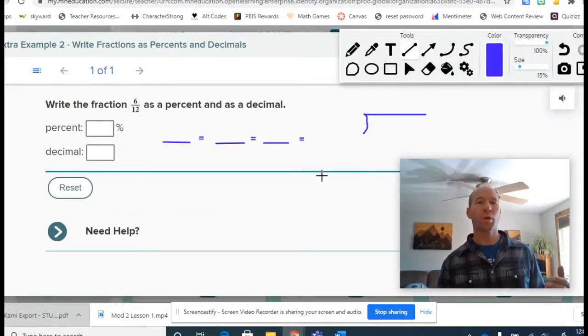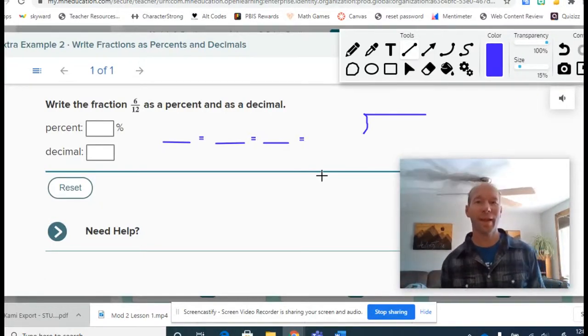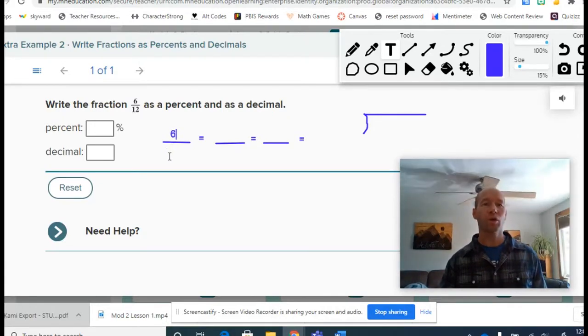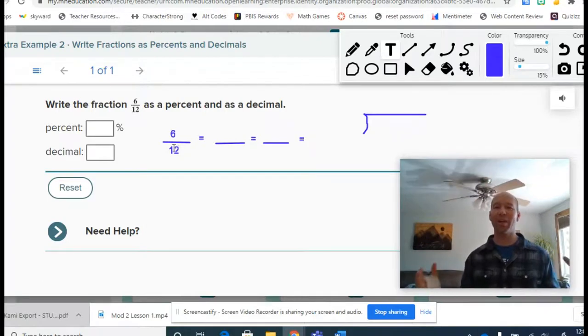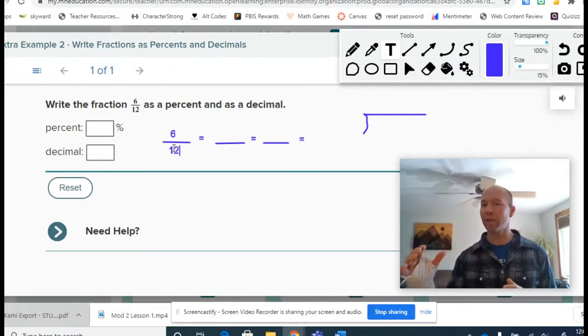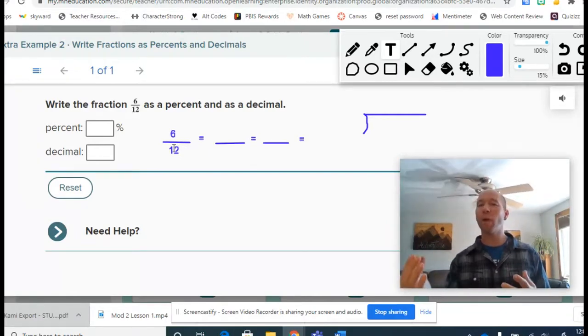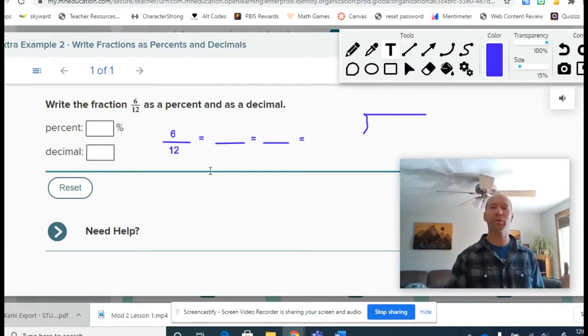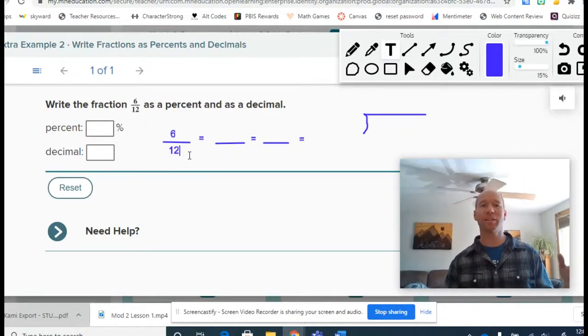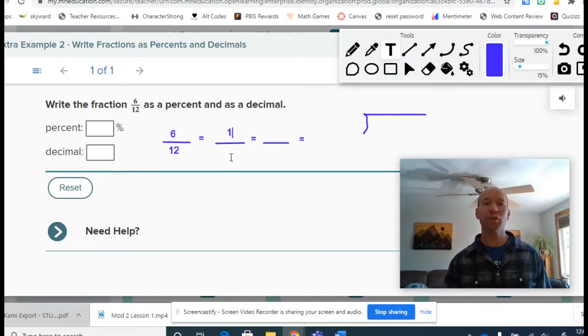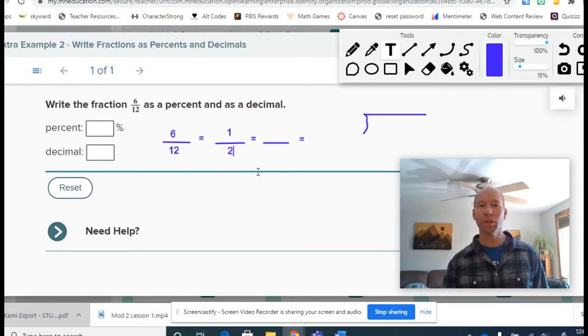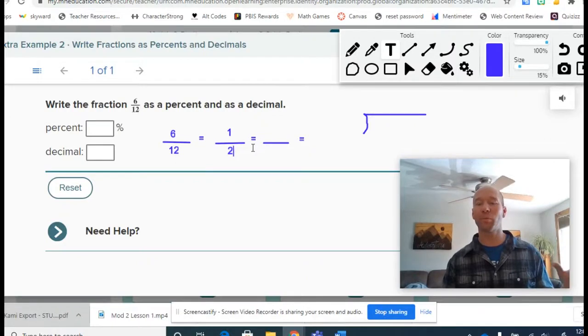All right. So we have a question here, write the fraction 6/12 as a percent and as a decimal. All right. So I have a fraction, I've got 6/12. I need to see how the fraction 6/12 relates to a hundred because we are trying to get to out of a hundred. So we need to get 12 to scale up to a hundred, but I can't quite do that. So I'm going to simplify 6/12. Six divided by six is one and 12 divided by six is two. So I get the fraction 1/2, which is a simplified version of 6/12.